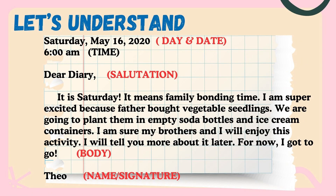Let's understand. This is a sample diary entry. Take a look at its parts and how it is written. Saturday, May 16, 2020 — this is the day and date of the diary entry. 6 o'clock AM — this is the time. Dear diary — this is the salutation.